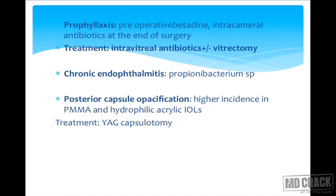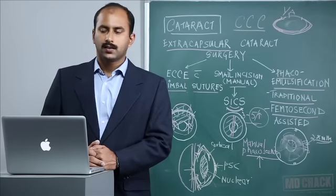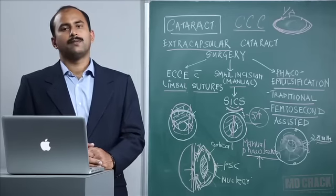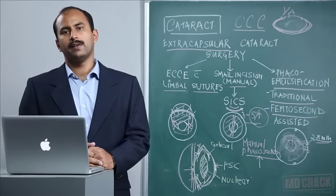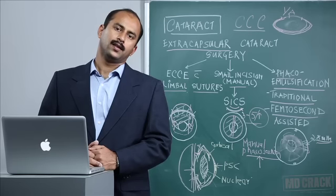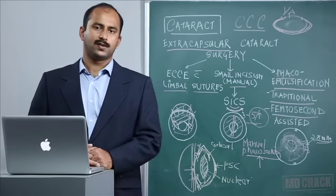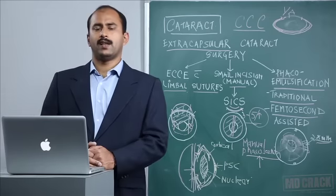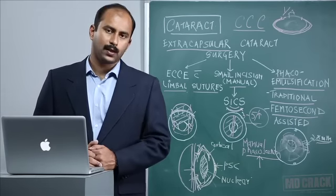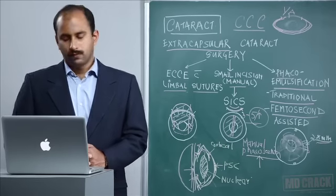An important aspect is chronic endophthalmitis due to a low-grade commensal organism of the lids called Propionibacterium species. This presents as a slow, low-grade uveitis months after surgery and is exquisitely responsive to steroids, but the inflammation recurs the moment steroids are stopped. Intravitreal injection of antibiotics, intracapsular injection of antibiotics, or intraocular lens explantation may be required.